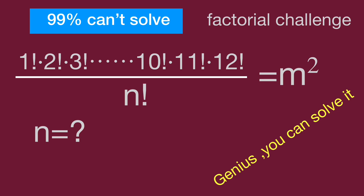1 factorial times 2 factorial times 3 factorial, dot dot dot, times 10 factorial times 11 factorial times 12 factorial, then divide it by n factorial, becomes a perfect square m squared. Find n.